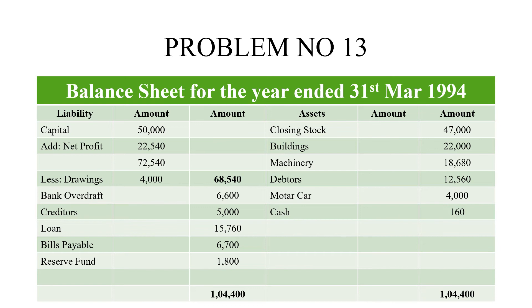We will figure out the balance sheet. We add the balance sheet at the end of the business. In this problem, we are getting 72,540 rupees by adding net profit. That is drawings — drawings means investors are taking money for personal use from the business. That amount is less, so we get a reduced figure.